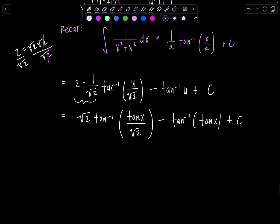Now I can simplify just a wee bit more. Tan inverse of tangent of x, that'll just simplify to x. I can't simplify here though, because this argument is being divided by radical two. So this term's done.